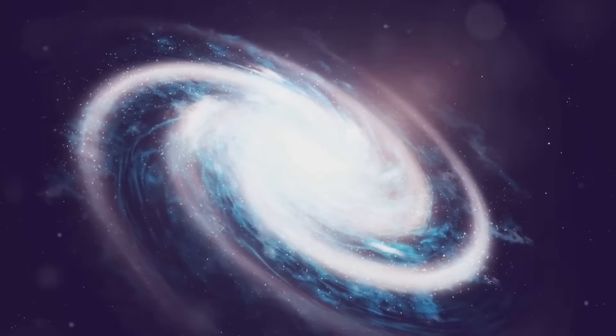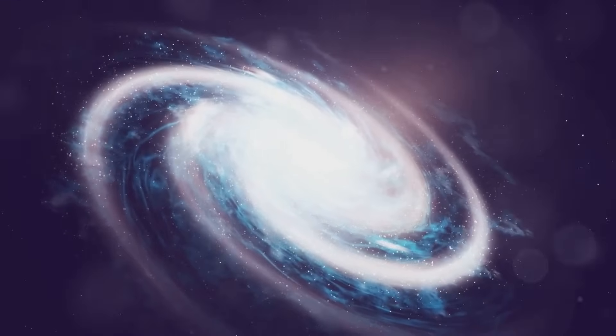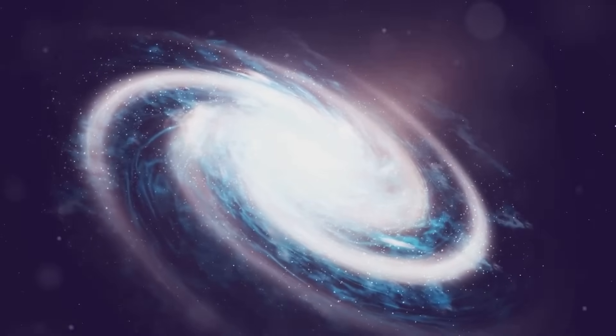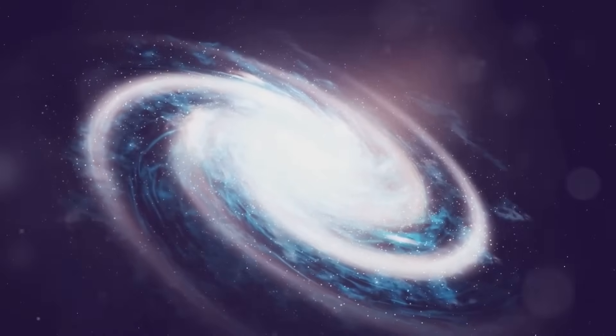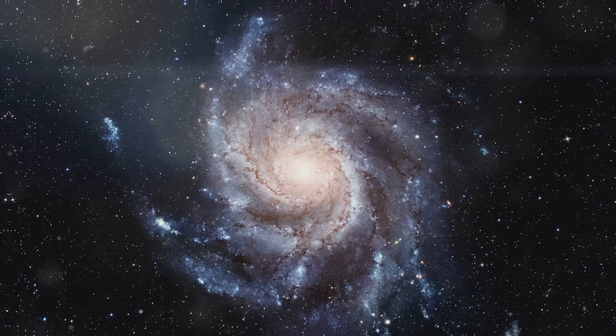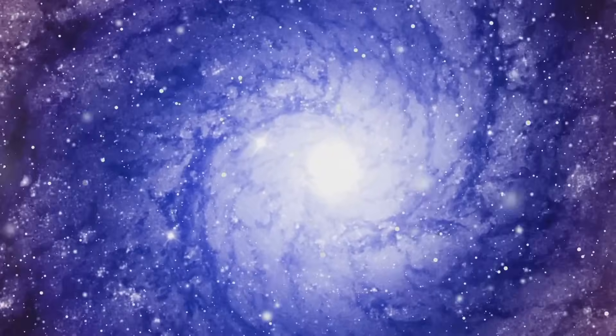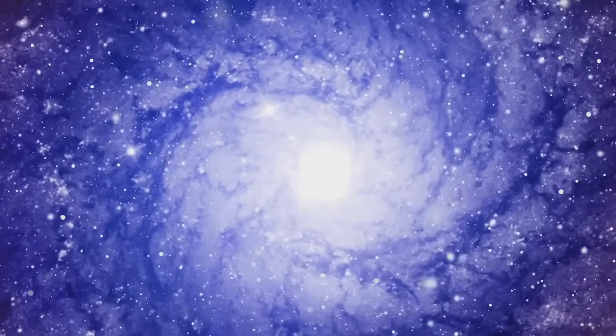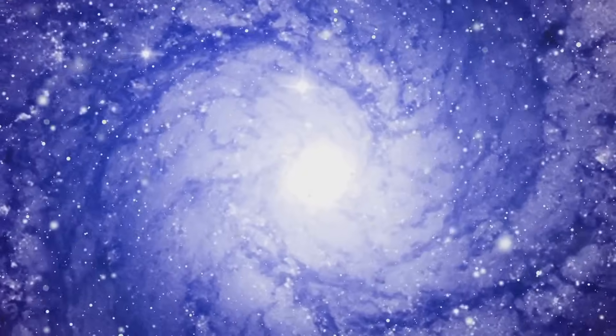The Milky Way also features a vast halo of dark matter, a mysterious substance that accounts for much of our galaxy's mass despite its invisibility. This unseen halo plays a crucial role, holding the galaxy together through its gravitational influence. If the Milky Way were a pizza, those spiral arms would be the delicious swirls of cosmic cheese, keeping the galaxy flavorfully united.